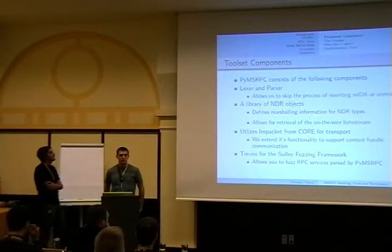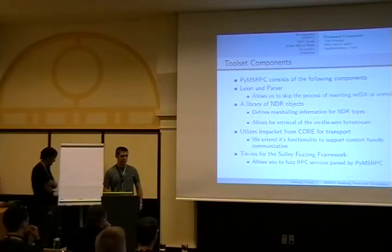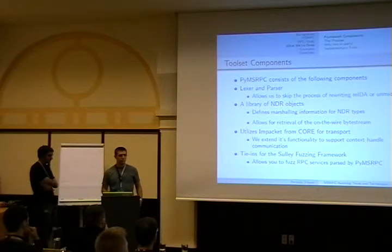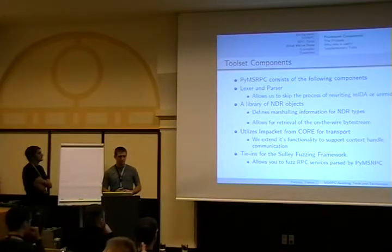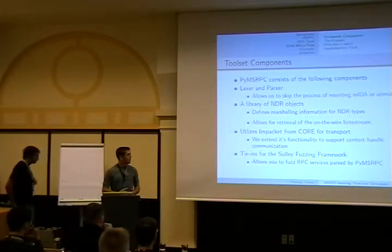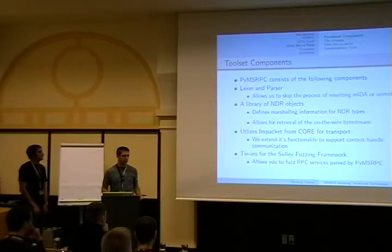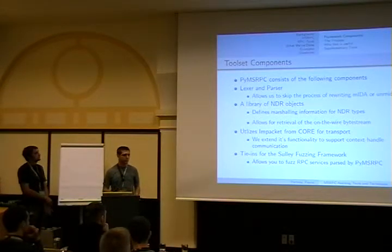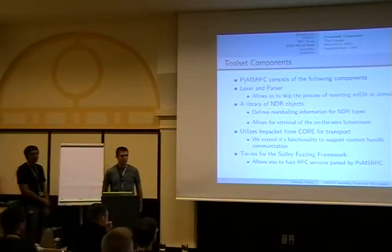The IDL file is the interface description language — it tells you how many functions an interface has, the structures, the opcodes. Because tools like UnMiddle and MIDA already extract IDL from a binary, we decided to skip that step and instead lex and parse those IDL files into Python objects. We wrote a lexer and parser that takes an IDL file — developed primarily using MIDA output — and pulls out all the opcodes, arrays, unions, and structures, creating Python objects for all of them and linking them together. We have a library of NDR objects — Network Data Representation — specifying how to marshal a long, a structure, a short, or a character array for on-the-wire transport, so it will be correctly unmarshalled on the other end.